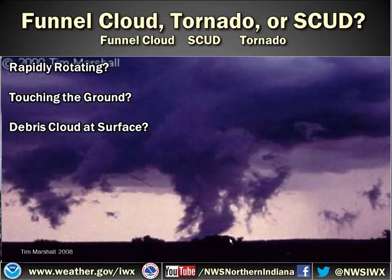Here's another example. Do we think it's rapidly rotating? It looks like it's touching the ground, that's for sure, but we can't really tell from where we're standing. There doesn't appear to be a debris cloud at the surface. Do we think it's really rapidly rotating? The edges are very jagged and disorganized looking. So in this case we would say no. Touching the ground — maybe. Is there debris at the surface? Not that we saw. So again, this would be an example of scud.